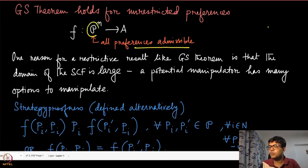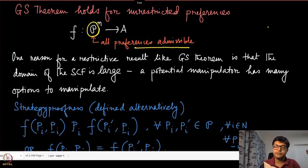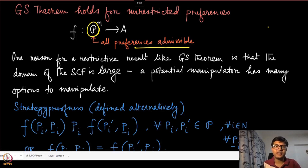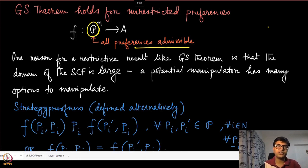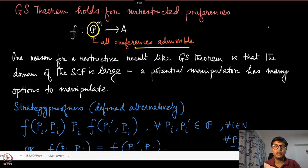The domain of the social choice function was the whole of script P. This may not always be true for certain applications — we might find cases where we can actually restrict it. All preference orderings over the alternatives might not even be feasible, and that is where our story of positive results begins.